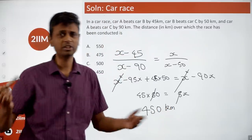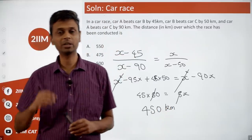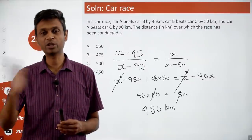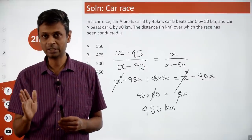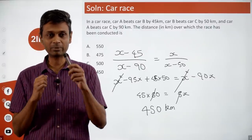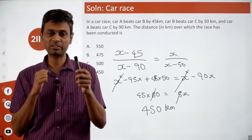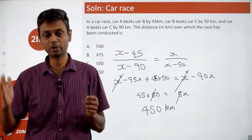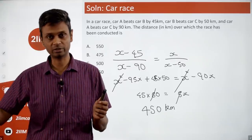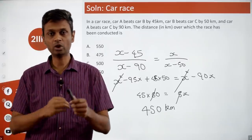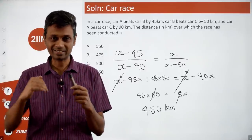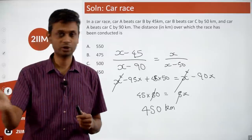A lot of these race questions just become ratio questions. The distance travelled by A to distance travelled by B is always the same ratio, no matter what the length of the race is. Just translate to ratio and we're good to go.